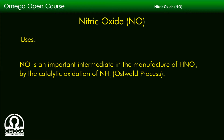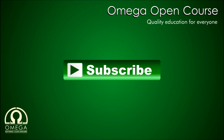NO is an important intermediate in the manufacture of HNO3 by the catalytic oxidation of ammonia in the Ostwald process. That's all about nitric oxide that we have to learn in our syllabus. Like and share the video if it was useful. If you have any question in chemistry, you can ask it by posting in the comment section. Subscribe the channel for more such videos and other updates. Thank you for watching.